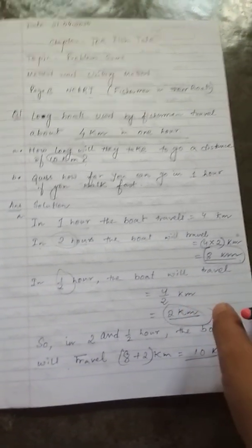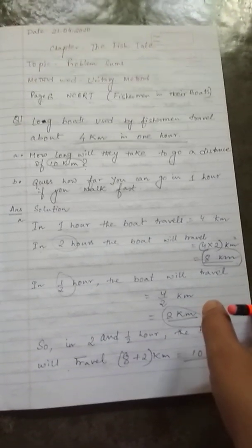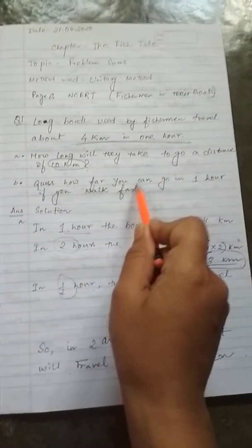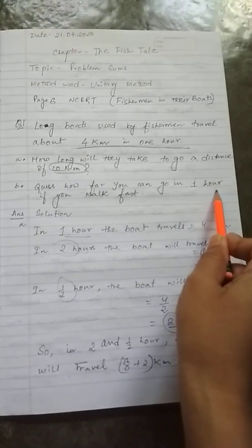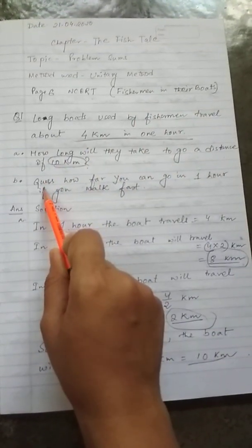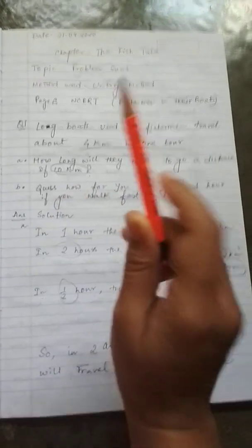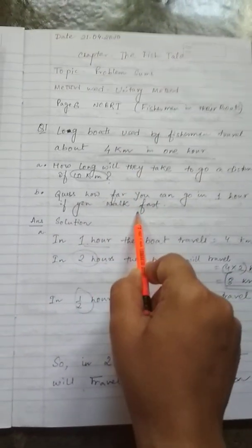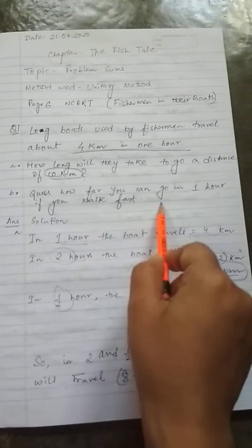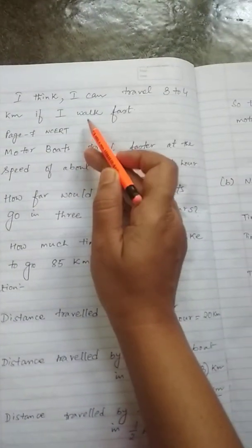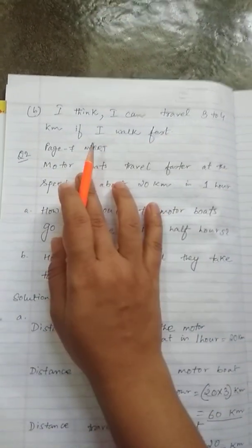Let's move to the next question. The part B is asking about, guess how far you can go in 1 hour if you walk fast. That is talking about your ability. If you walk fast, how much you can go in 1 hour. So from my point of view, I think I can travel 3 to 4 km if I walk fast.